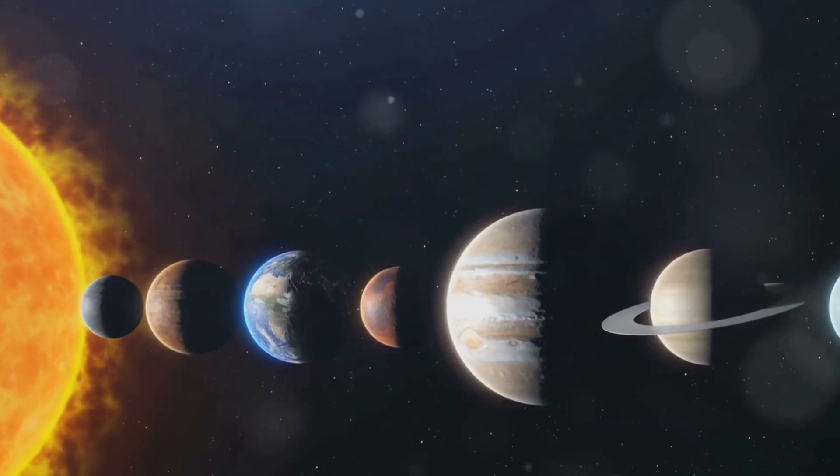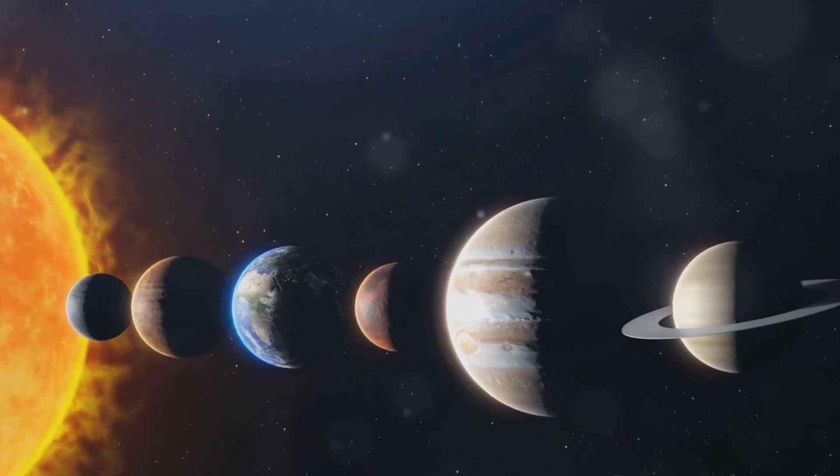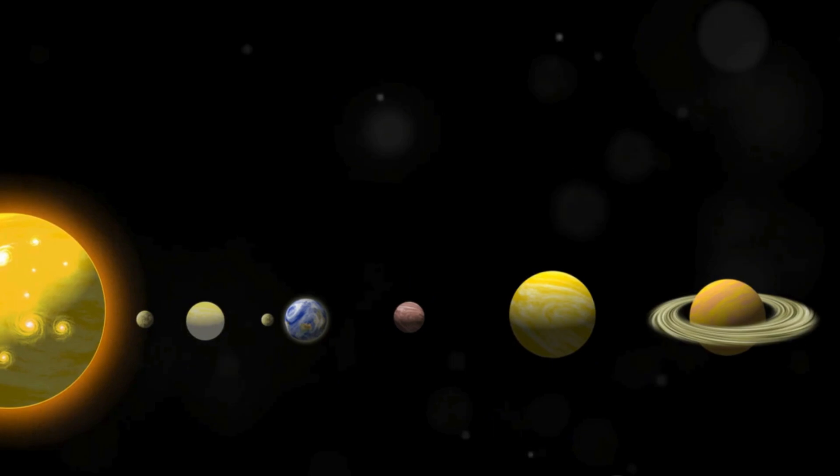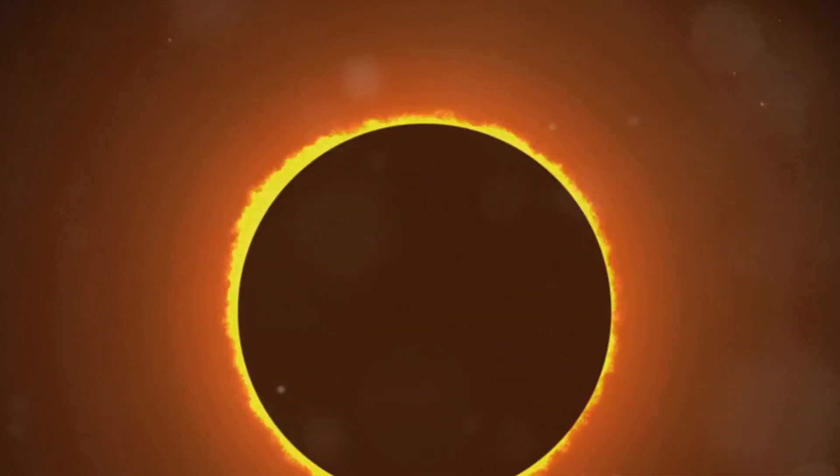A solar eclipse is a celestial ballet of sorts, a perfect alignment of the Earth, moon, and sun. It's a spectacle of astronomical proportions that has fascinated humans for centuries. The rarity of solar eclipses adds to their allure.